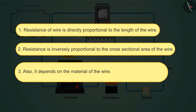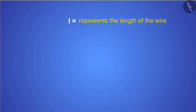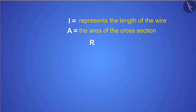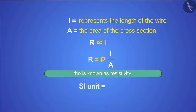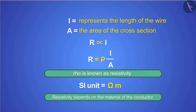Three, resistance also depends on the material of the wire, which we have already understood in our last video. This can be written mathematically: if L represents the length of the wire and A is the area of the cross-section, then resistance is directly proportional to L and inversely proportional to A. A constant rho (ρ) is introduced to remove the sign of proportionality, giving R = ρL/A. Rho is known as resistivity. The SI unit of resistivity is the ohm-meter, and resistivity depends on the material of the conductor.